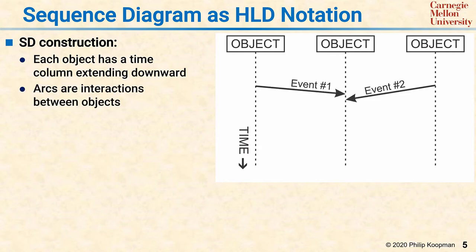The arcs are interactions between objects. An arrow that goes from one object to another indicates that the first object communicated with the second, and the position of the arrow vertically tells you when that happens. Generally, the timeline is not to scale; rather, what matters is which arrowhead happens before which arrow tail, implying a dependency. Each sequence diagram shows one scenario.